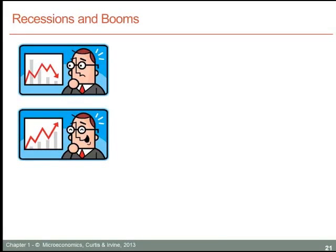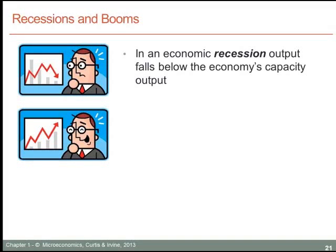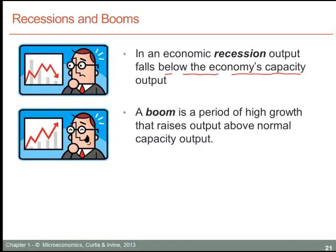The production possibility frontier can also be used to illustrate what we mean by a recession and a boom in a graphical context. In an economic recession, output falls — and more technically, output falls below the economy's capacity output level. In a boom, on the other hand, we have a period of high economic growth. A boom is to be distinguished from the more normal concept of economic growth in that a boom is a period of high growth that raises output above the normal capacity level of the economy.